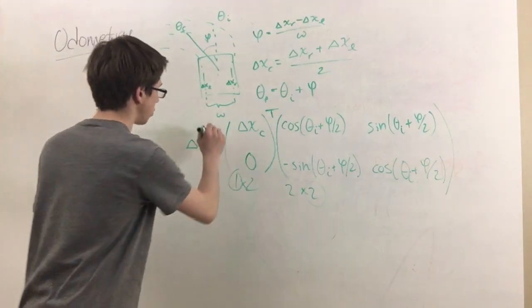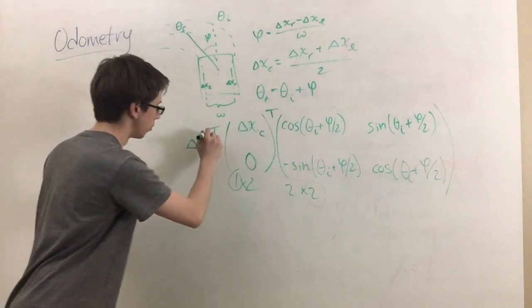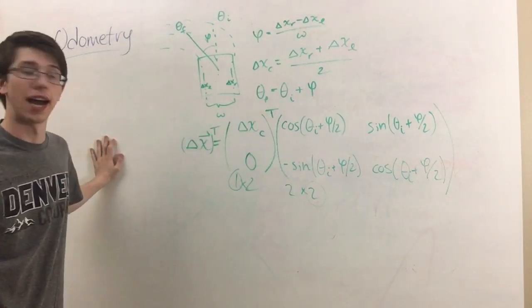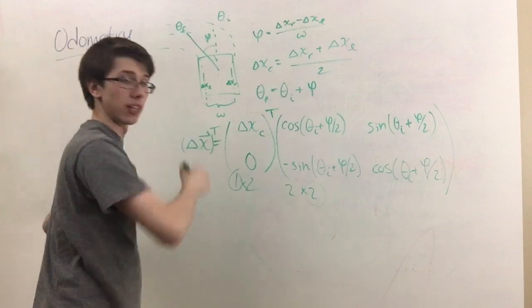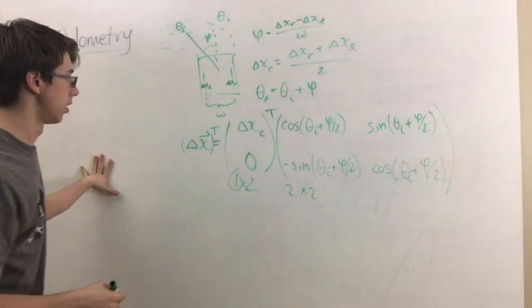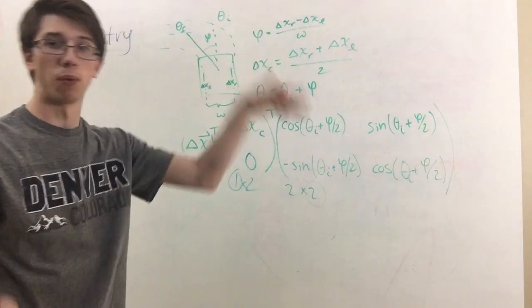Then we'll take the transpose of that. So we'll say that this is the transpose of delta x, of our delta x vector, because we want it to be a 2 by 1 vector.